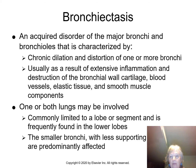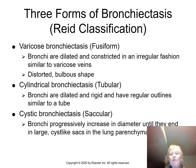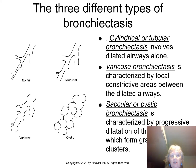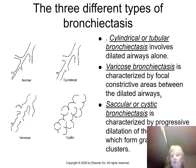There are three forms of bronchiectasis: varicose, cylindrical, and cystic. The normal airway is nice and smooth. Cylindrical bronchiectasis shows airways that are a little larger in some areas. Varicose looks like varicose veins. Cystic bronchiectasis presents with lots of airways in grape-like clusters.